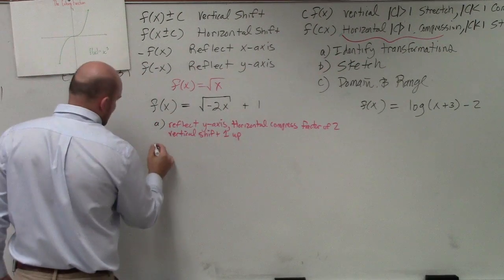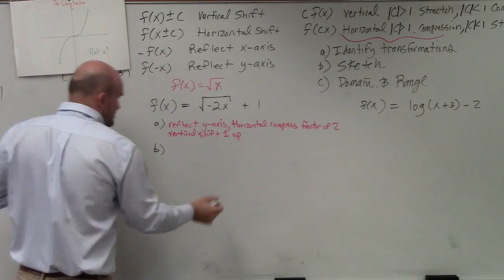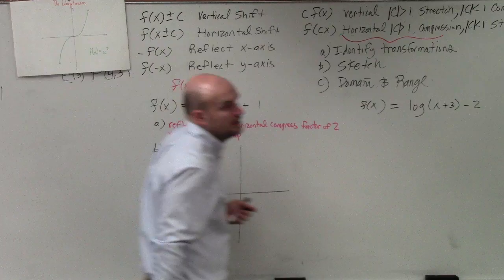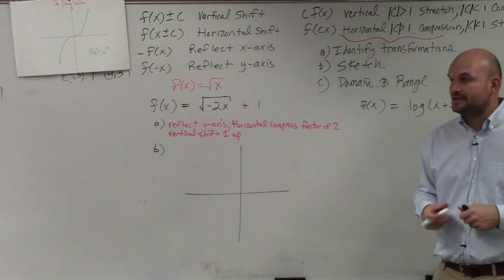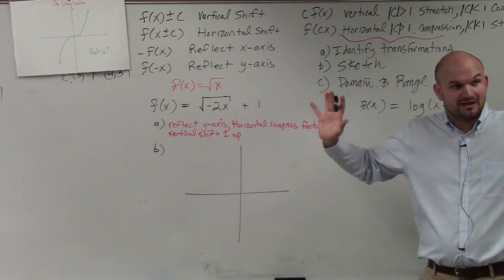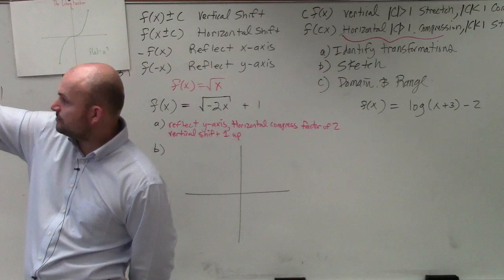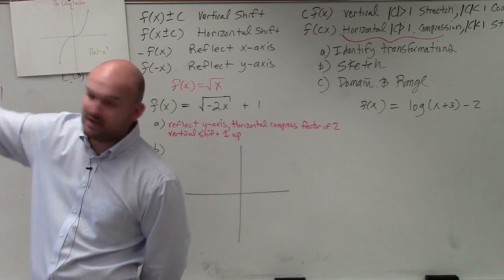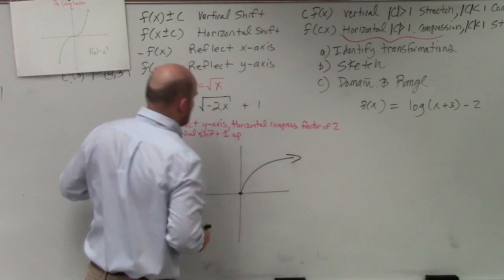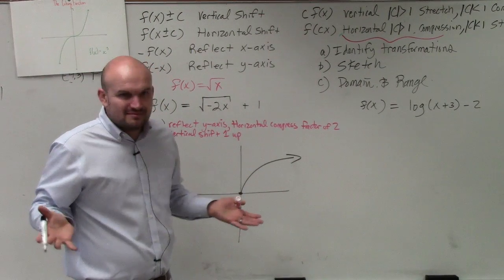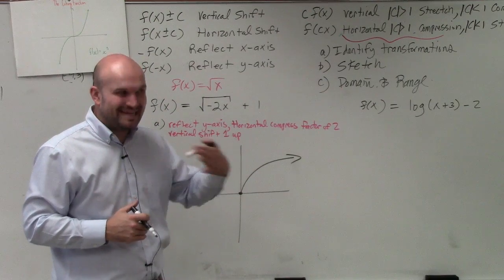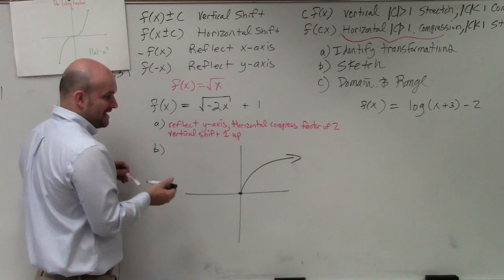Now let's get to the graphing portion. This is why it's important to know what the graph looks like. We need to remember what the square root parent graph looks like — it doesn't need to be perfect, but I have it written up on the board. It looks something like this. Now, let's apply each transformation individually. I'm going to reflect over the y-axis first.